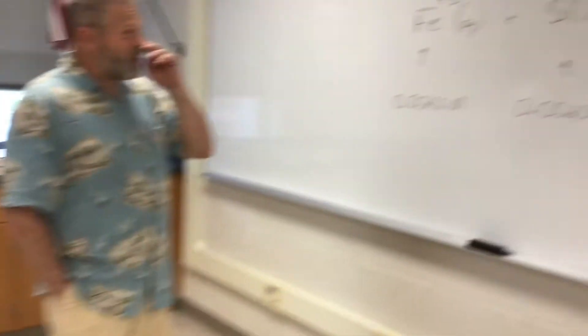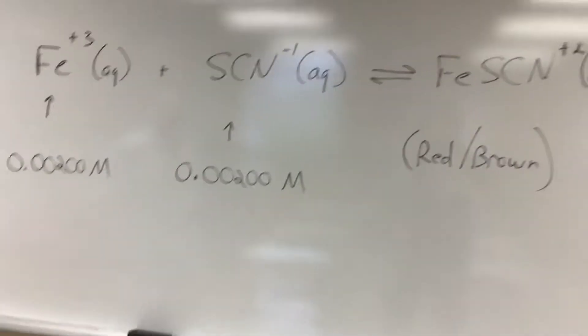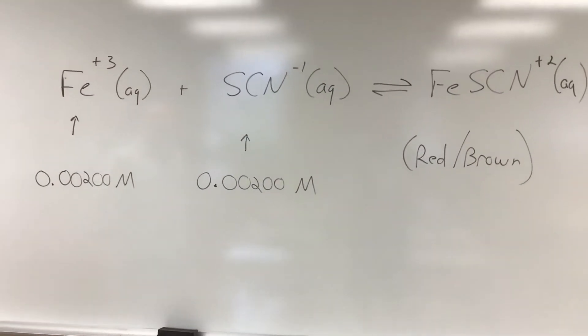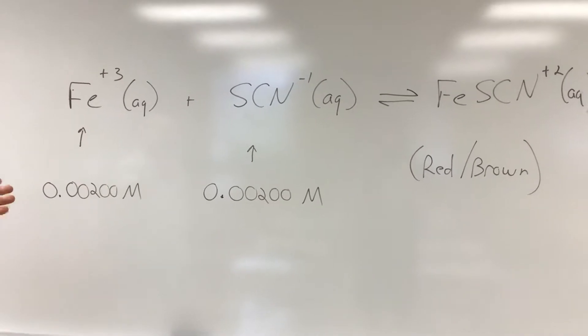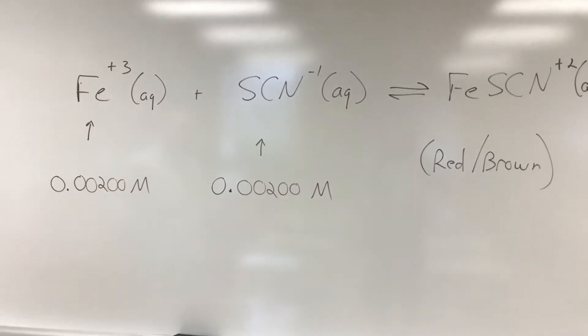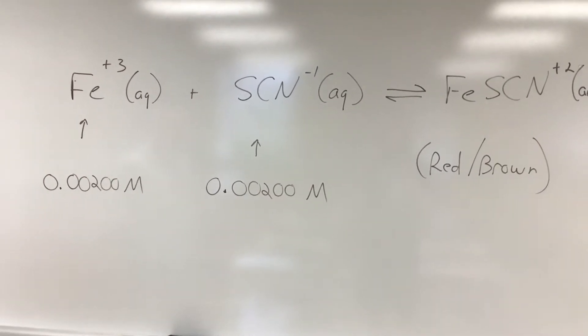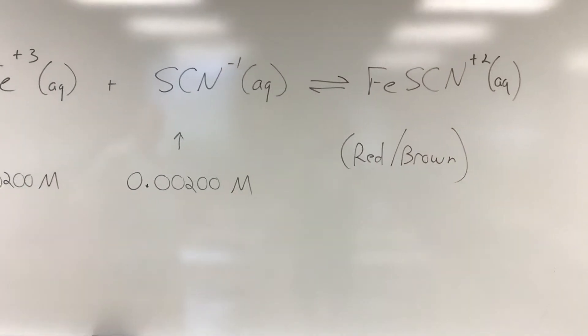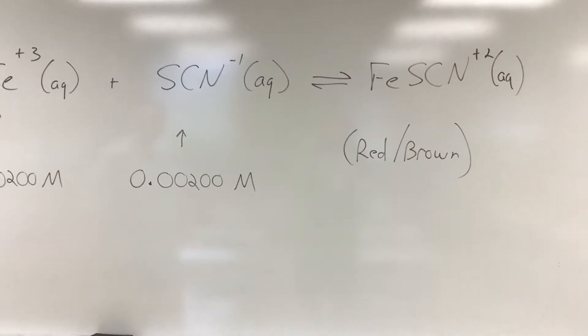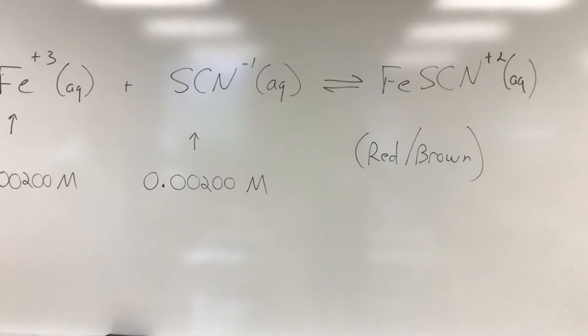And here's the equilibrium that we're studying. It's an equilibrium that involves iron plus three ions, thiocyanate ion, and they produce a complex ion, FeSCN^2+, that has a reddish-brown tinge to it.